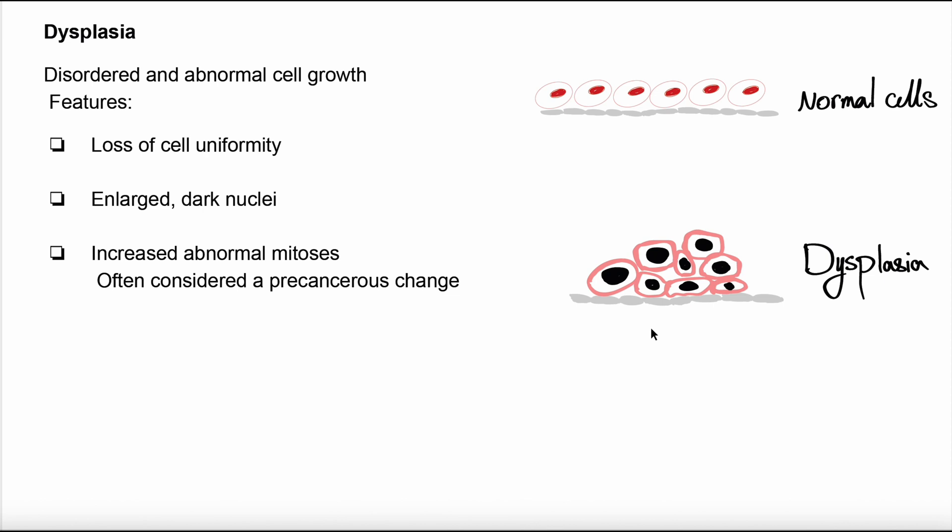Also, we have different shapes and sizes in the cells in the tissue. There might be some giant cells, which is the sign of malignancy. Generally, dysplasia is considered premalignant and can progress to cancer.